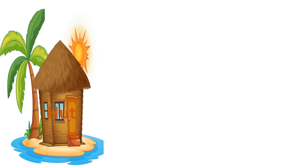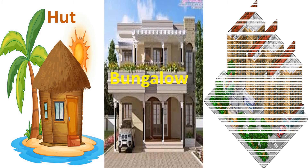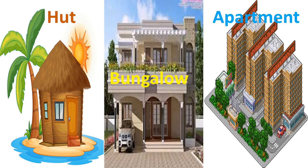In plain areas, people used to build huts, bungalows and apartments. There is a difference between bungalow and apartment. A bungalow has only two or three floors, whereas an apartment has many stories and many floors.